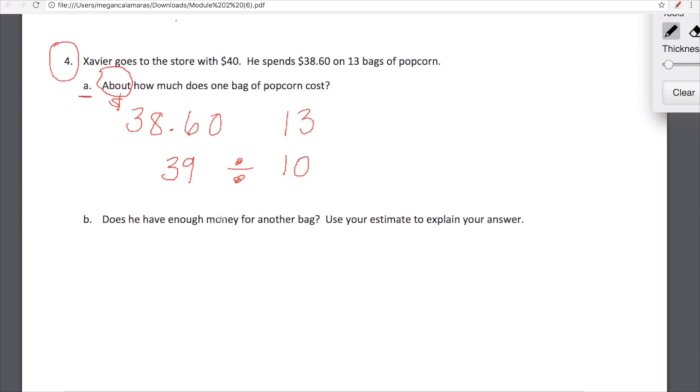From here all we have to do is divide 39 by 10. Sorry guys, I'm making a math movie for my fifth graders. I'm not talking to myself I promise. When we divide 39 by 10, what happens in a situation like this? Yes miles, 39 is going to move to the right one place value and we are going to come up with 3.9. So our answer here, about how much does one bag of popcorn cost? Well it costs about $3.90.